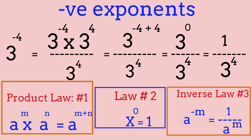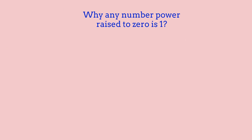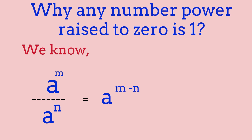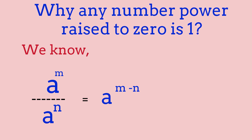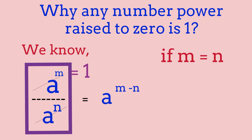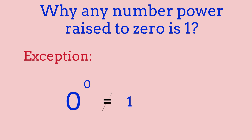So why does anything to the power of 0 equal 1? We know this because of the formula: a to the power of m divided by a to the power of n equals a to the power of m minus n. If we say m equals n, then a to the power of n divided by a to the power of n cancels to 1, which equals a to the power of n minus n, or a to the power of 0. So this is why anything raised to the power of 0 equals 1. The one exception is 0 to the power of 0, which is undefined — just like dividing a number by 0 is undefined.